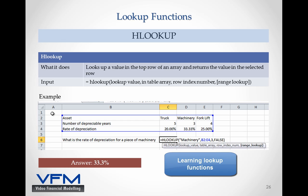We're going to say equals HLOOKUP, and so the first row is obviously the asset which includes truck, machinery, and forklift. So we're going to look up the machinery and we're going to look it up in the table array of the selected. So it's B2 all the way through to E4.